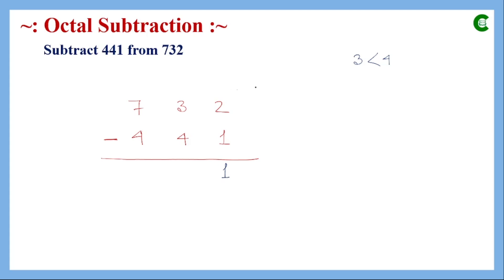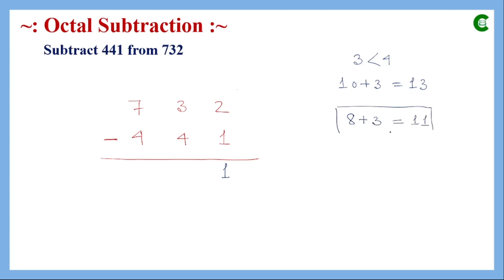In decimal we would borrow 10, but this is octal, so the base is eight. We borrow 8 from the next significant digit. Adding 8 to the existing 3 gives 11 in this position. We remember this rule: the borrowed value in octal is always 8. Now we subtract 4 from 11.